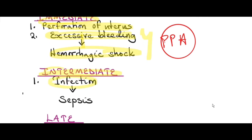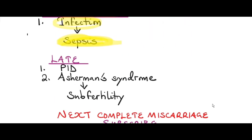The intermediate complications are infection. As you do your manual vacuum aspiration, you can introduce infection into the uterus, which can result in sepsis. Sepsis could be endometritis or full-blown septic shock.